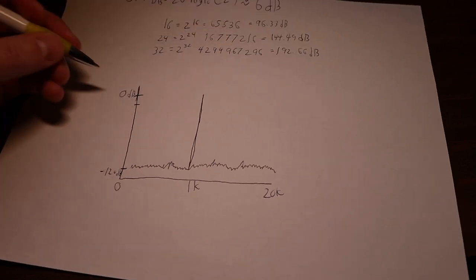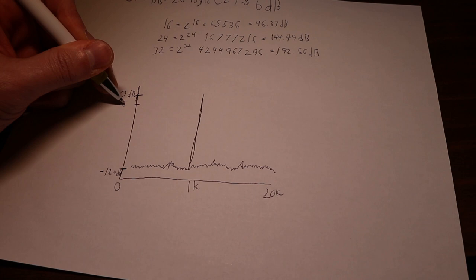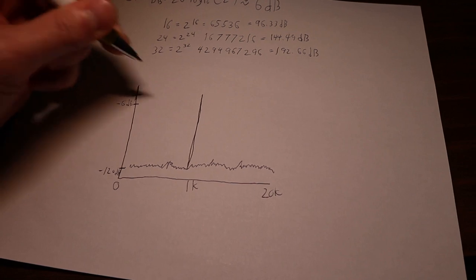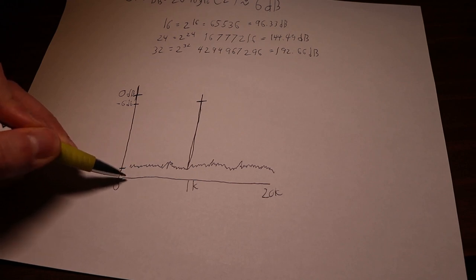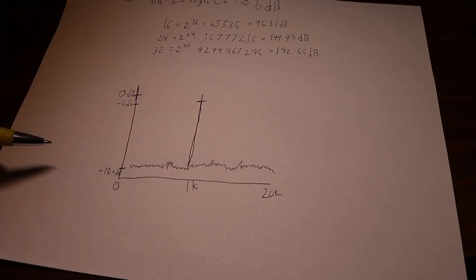And we're going to reduce our volume by essentially 6 dB, because like we said earlier, one bit is essentially 6 dB. So now we're at a negative 6 dB signal. This is going to be our new reference point. So what happens to the noise? What happens to all the noise down here?